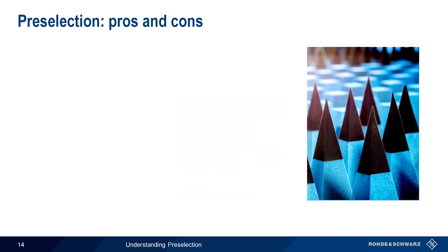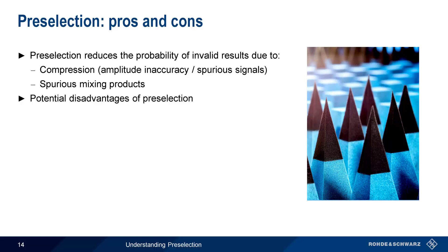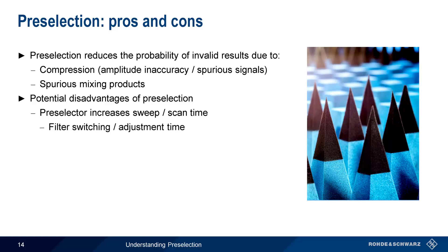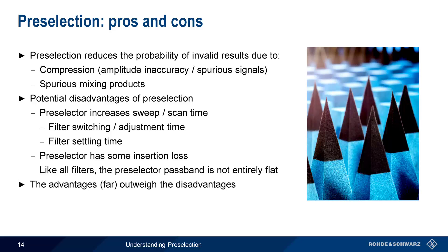So what are the pros and cons of using preselection? The main advantage is that it reduces the probability of invalid results due to compression and/or the creation of spurious mixing products. There are, however, a couple of things to keep in mind. First, a preselector can increase the time needed to perform a sweep or scan, due to the time needed to switch between filters in a filter bank, or to adjust a tunable filter, as well as the settling time needed for the filter. Less serious considerations include any insertion loss caused by the preselector, and the fact that the passband in preselection filters will not be entirely flat. That said, in the vast majority of cases, the advantages of preselection far outweigh the potential disadvantages.